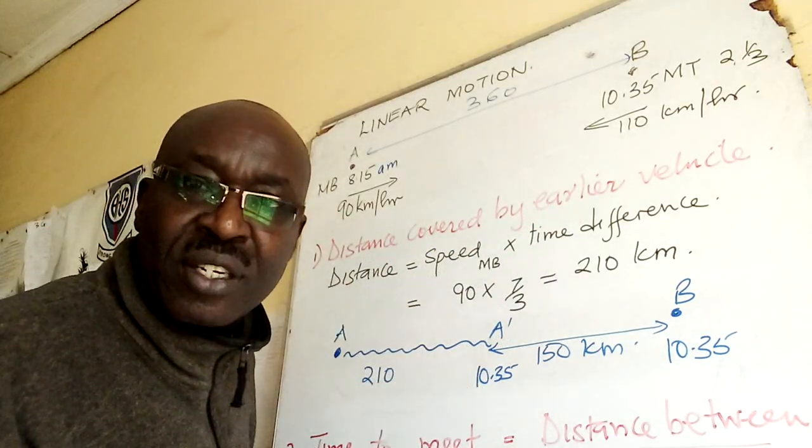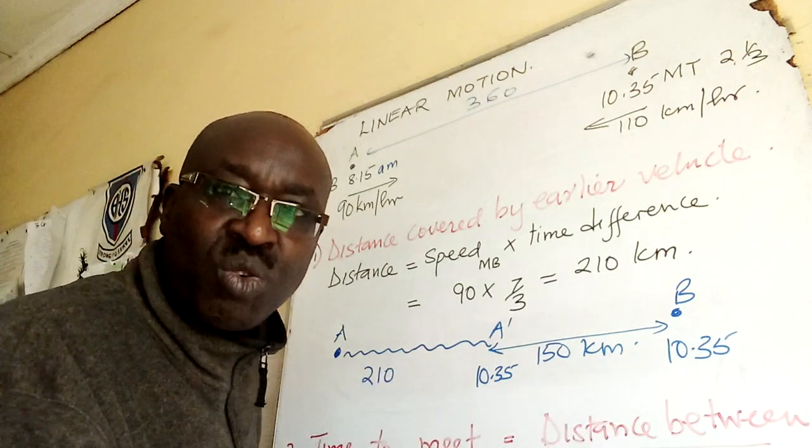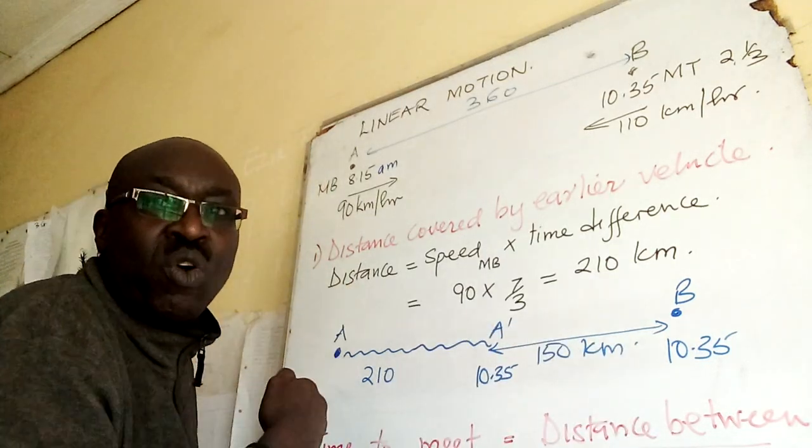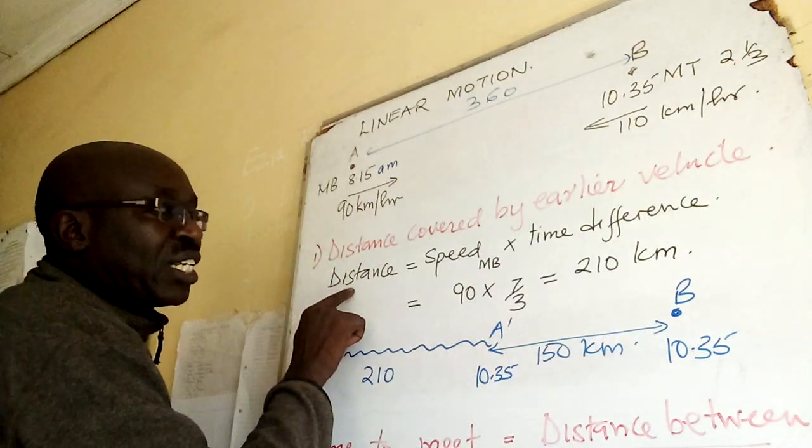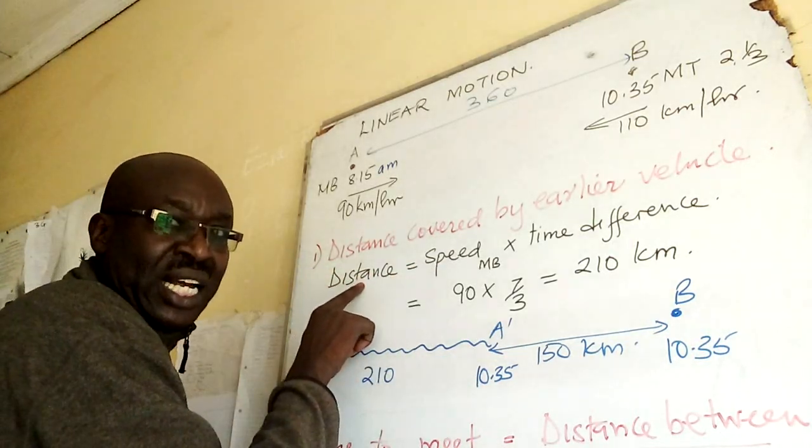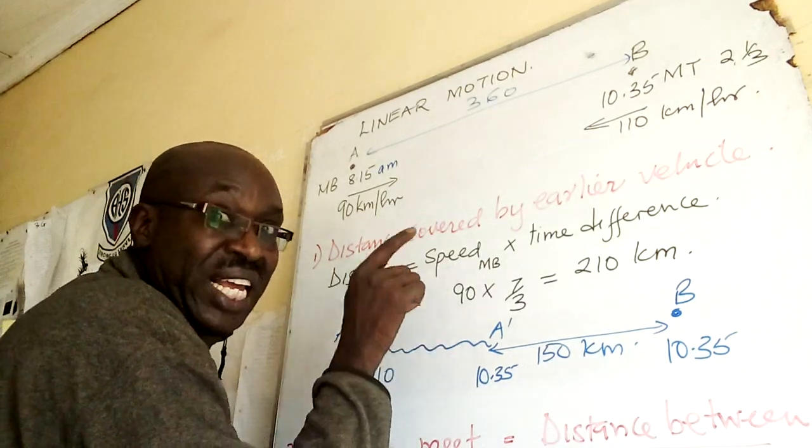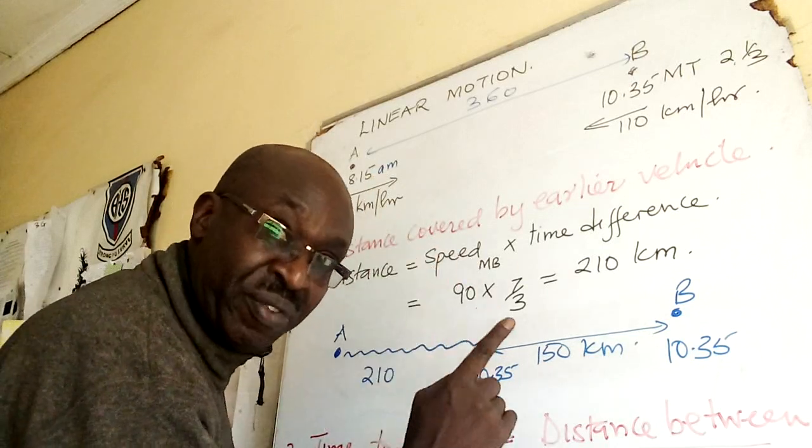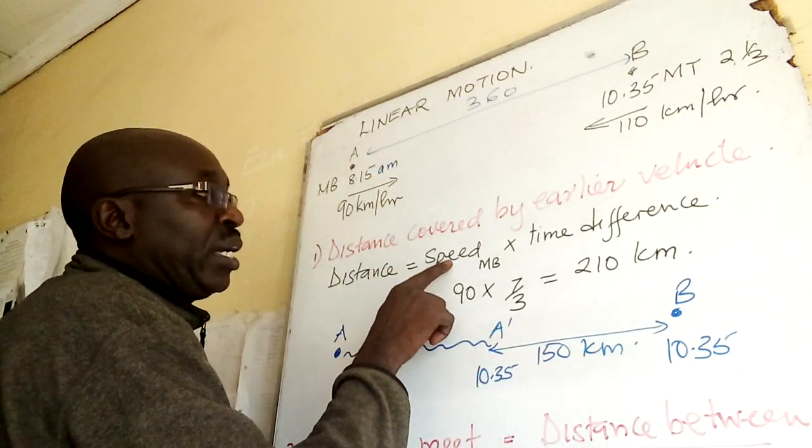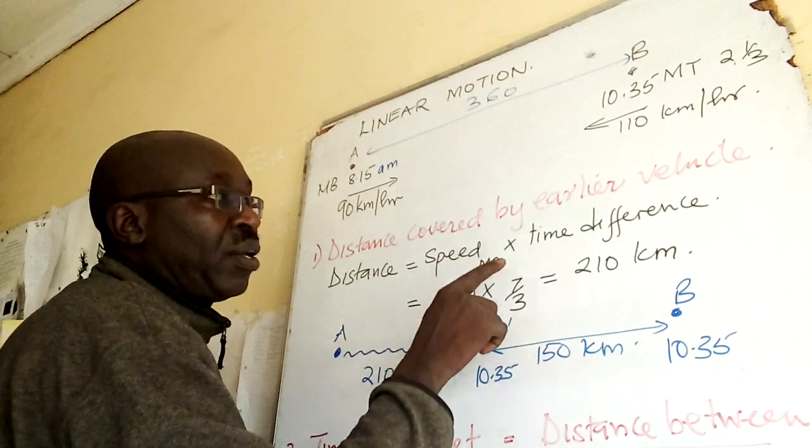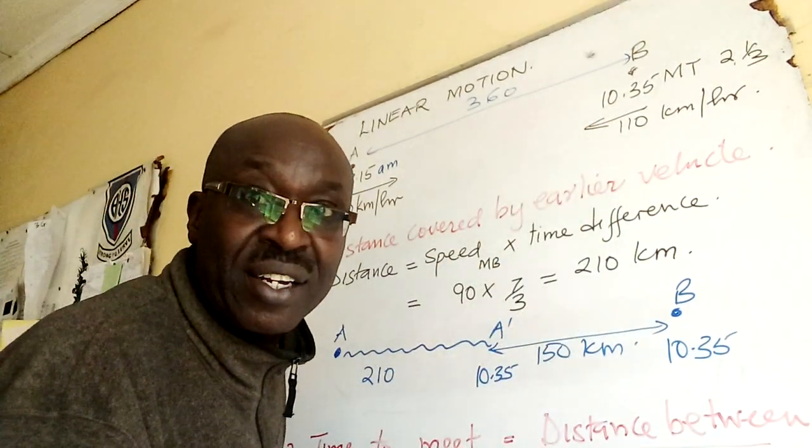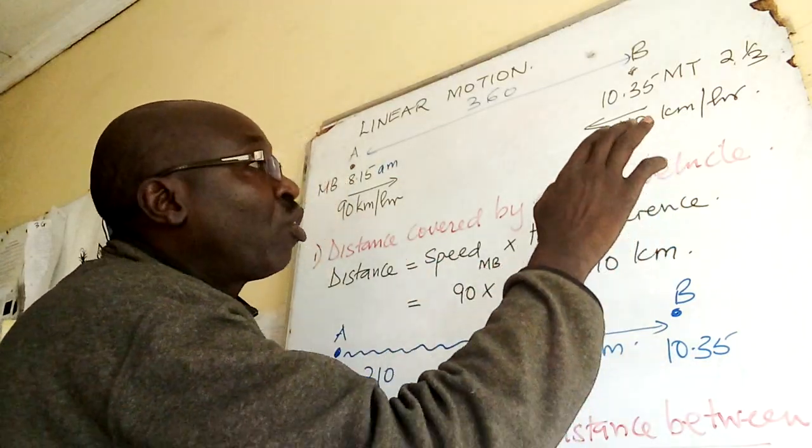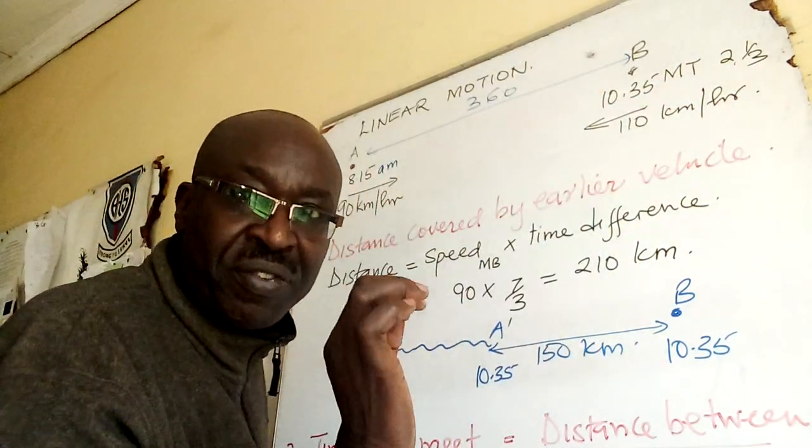How far has it gone by the time the other one wants to start operating? In our case the one which started earlier is the minibus, and the time difference is two and a third. So distance equals its speed times time difference.